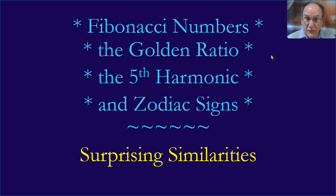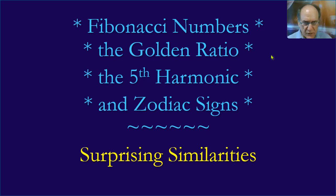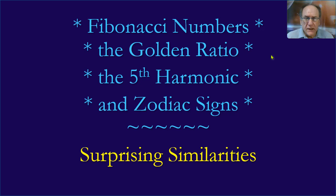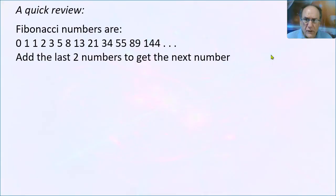Hello, in this video I'm going to show some surprising similarities and relationships between some things that seem unrelated, which are the Fibonacci numbers, Golden Ratio, the Fifth Harmonic as it's used in astrology, and Zodiac Signs. These things may not seem like they have any direct connection to each other. We're going to look at how they're actually connected, as part of the theoretical framework for vibrational astrology, which is based on vibration and sacred geometry — the amazing ways in which things are woven together in a whole fabric.